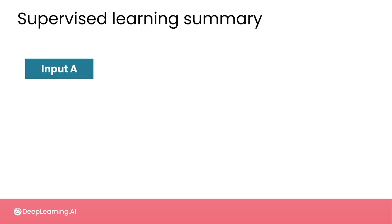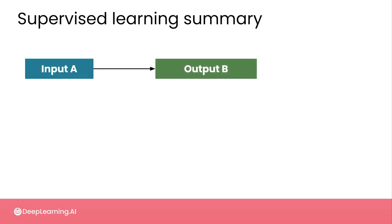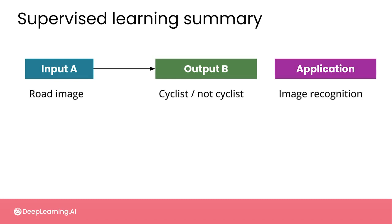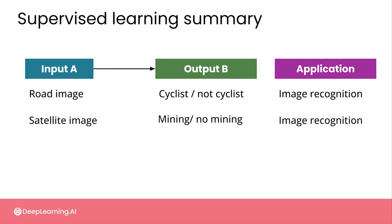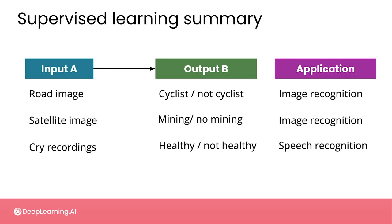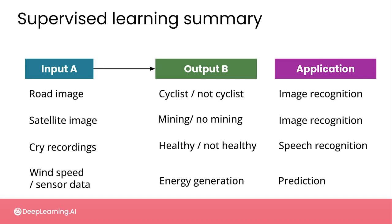The point here is that you could have any kind of data set where each example input A is associated with an appropriate output B. These inputs and outputs might be an input of a picture and an output of "cyclist" or "not cyclist," or an input of a satellite image and an output of "mining" or "no mining," or an input of an audio recording and an output of "healthy" or "not healthy," or anything else you're interested in — like wind speed and energy output, or text in one language and a translation into another.